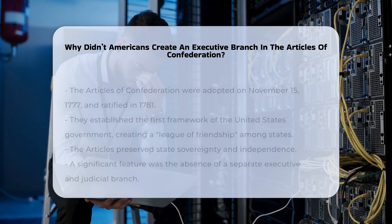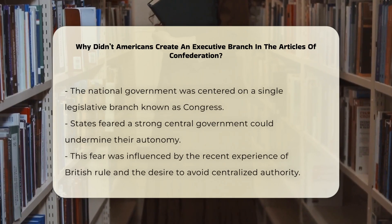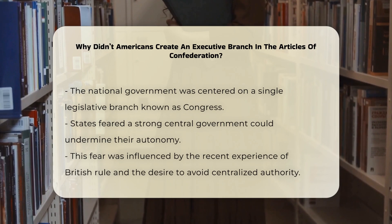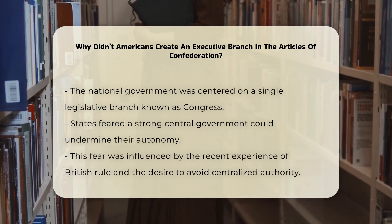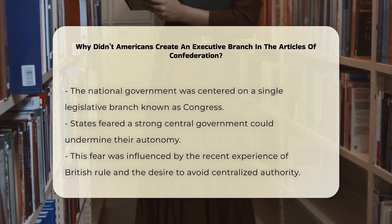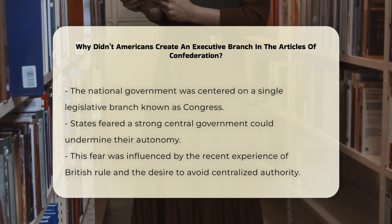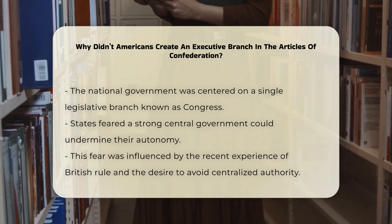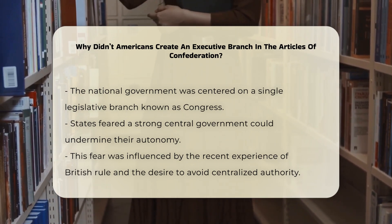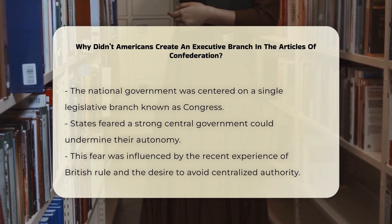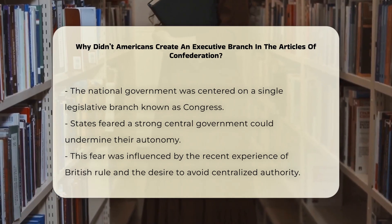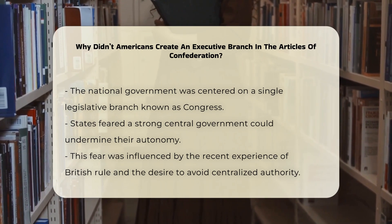The national government was centered on a single legislative branch known as the Congress, which consisted of a single house. The decision to omit an executive branch was largely driven by the fear of a strong central government. The states did not want to create a powerful central executive that could potentially undermine their independence and autonomy. This fear was rooted in the recent experience of British rule and the desire to avoid any form of centralized authority that might resemble a monarchy.